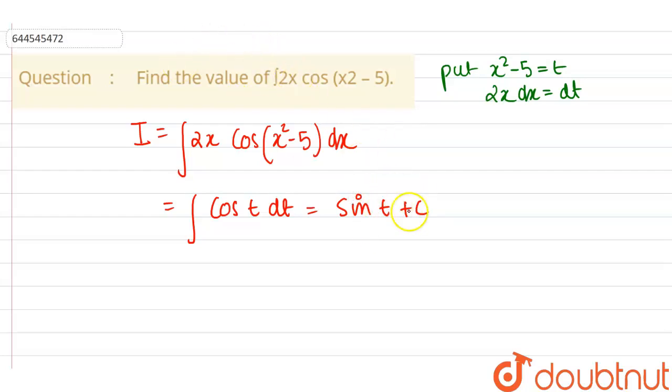So we now have to substitute the value of t here. So now it is equal to sin(x² - 5) + C. So guys, this is our final value, which is sin(x² - 5) + C, where C represents the constant value.